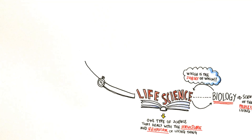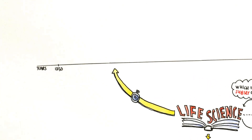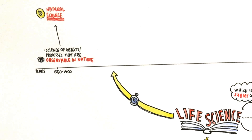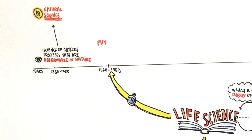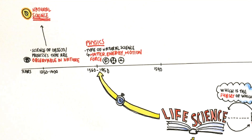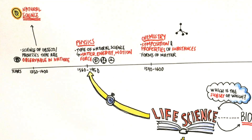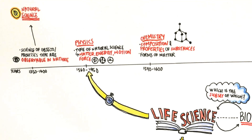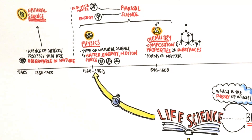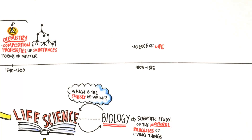To answer the question, maybe we should go back to the origin of when these terms were coined. The science of objects or processes that are observable in nature is called natural science. Physics is one type of natural science that deals with matter, energy, motion and force. Chemistry is the other field of natural science that deals with the composition and properties of substances and various elementary forms of matter. Together, they are called physical science, which deals with inanimate matter and energy. The science of life or living matter came about later.